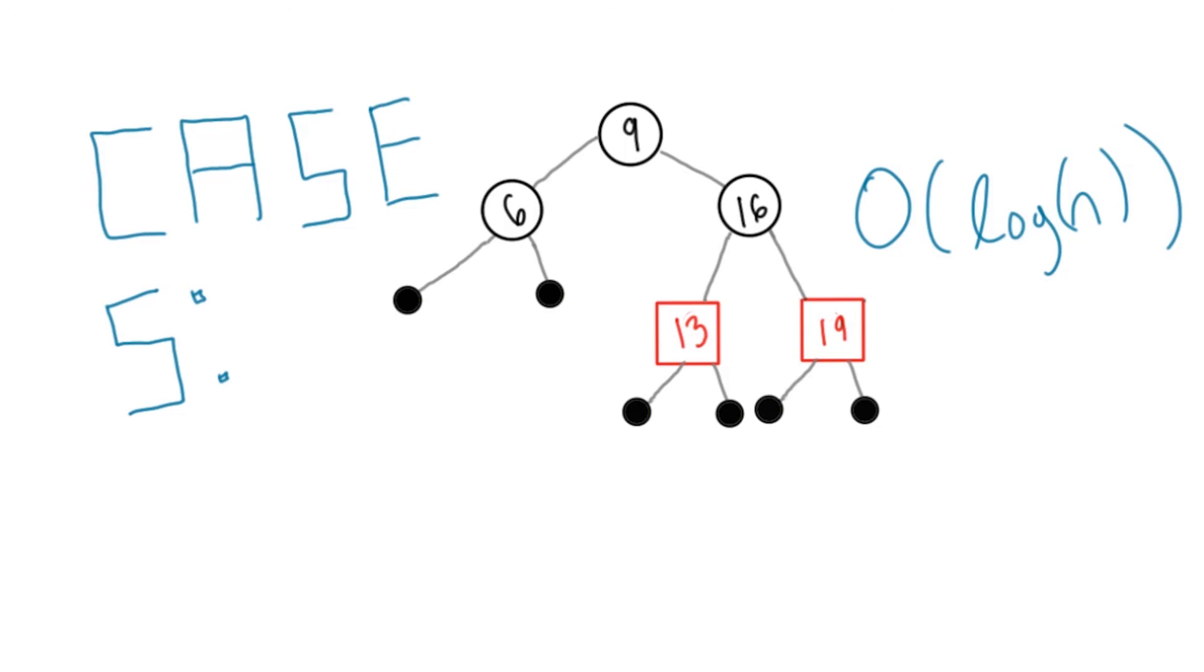BSTs were O(n) in the worst case because they could be unbalanced. Because we're careful about staying balanced here, the runtime won't be that large.